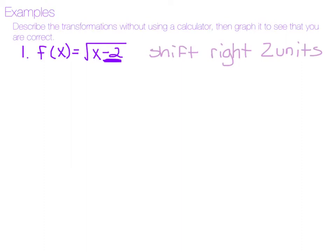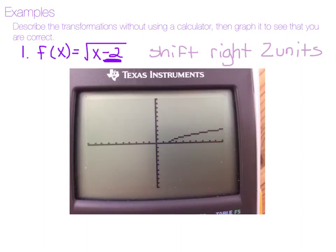It says x minus 2, so it's going to go 2 units to the right — shift right 2. We can put that into the calculator and graph it. Each of our home base points has shifted right 2 units: instead of (0, 0) we have (2, 0); instead of (1, 1) we have (3, 1); instead of (4, 2) we have (6, 2); and instead of (9, 3) we have (11, 3). We've added 2 to all the x values of the home base points.